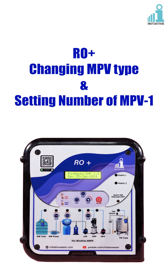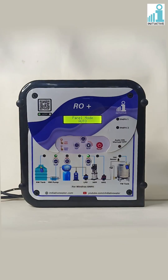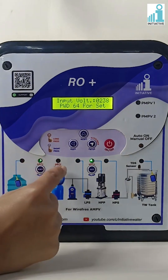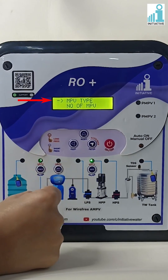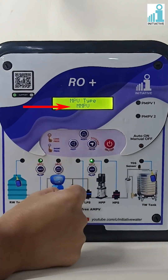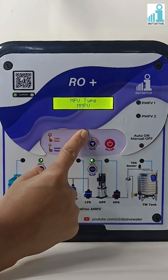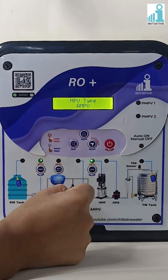This is Initiative's RO plus panel and we are doing the settings of MPV type change in RO plus with one MPV. Long press the MPV backwash key and press enter on MPV type. We can see the current MPV type is MMPV. Press the menu button to change the type.